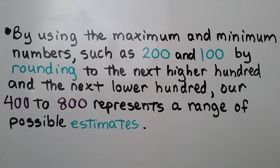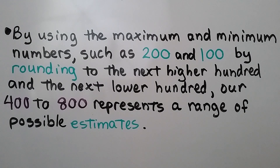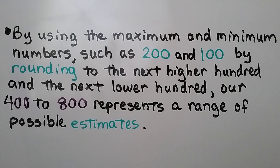So the exact answer is estimated to be between 400 and 800. By using the maximum and minimum numbers — 200 and 100 — rounding to the next higher hundred and the next lower hundred, our range of 400 to 800 represents a range of possible estimates.